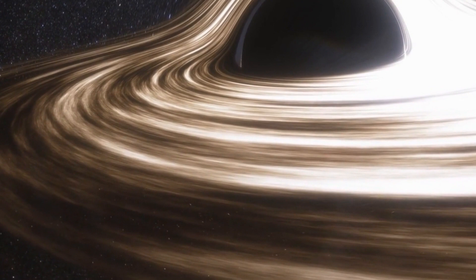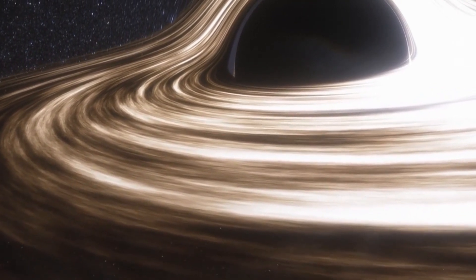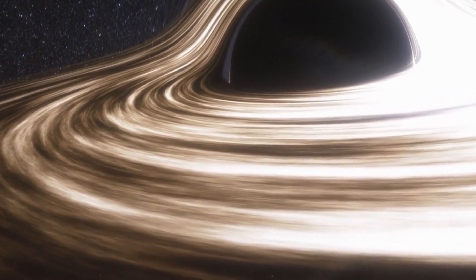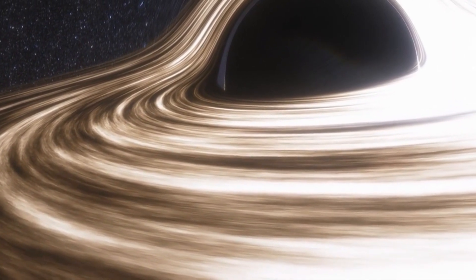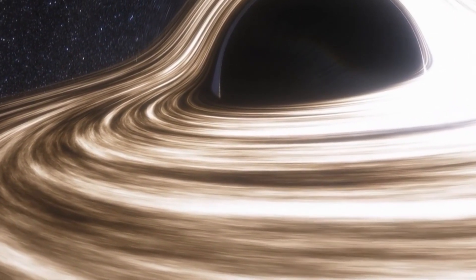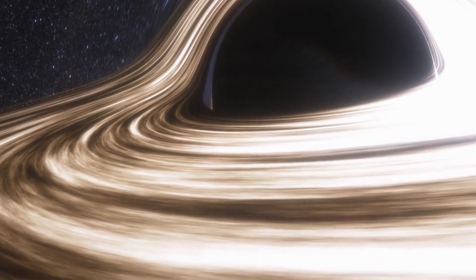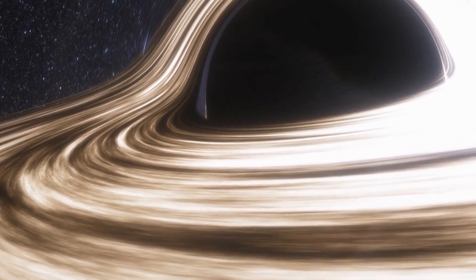The innermost stable circular orbit, ISCO, marks the limit where circular orbits become unstable and plunge into the event horizon. The ISCO depends on both the mass and the spin of the black hole, and it becomes smaller as the spin increases.